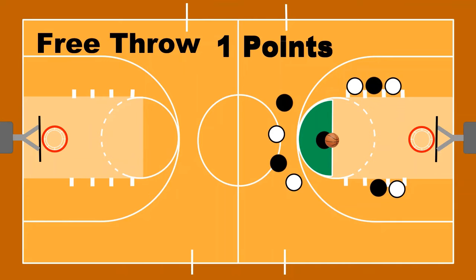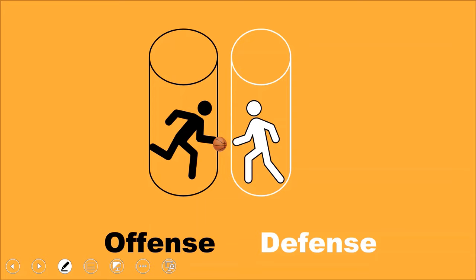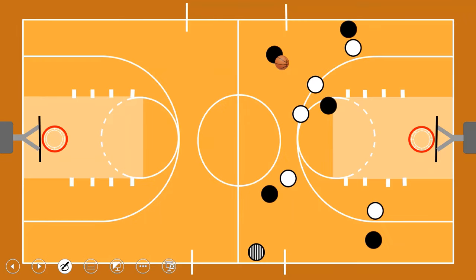We talked about free throws earlier. A player stands in a special area and throws the ball into the basket. This special situation happens whenever there's a foul. Depending on where and when the foul happens, you can get one, two, or three free throws. A foul occurs when an offensive player bumps into or hurts a defender, or a defensive player hurts the offensive player — that's a defensive foul.